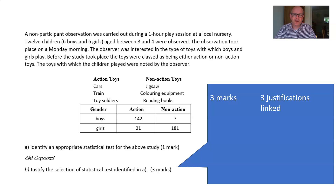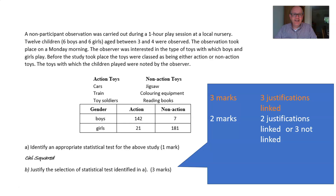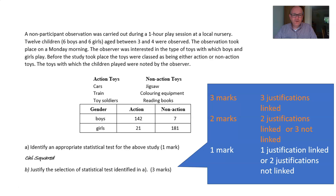To get full marks for question B — which is out of three — you need to pick out each of the three elements and link them to the study. You identify the justification and clearly link it to the study, referring to girls and boys, play, and local nursery schools — putting it into the context of the study. If you don't put them into context and you identify all three, you'll get two marks. If you identify two and link them you also get two marks. For three marks it's three identified and linked. If you identify two without linking it's one mark.